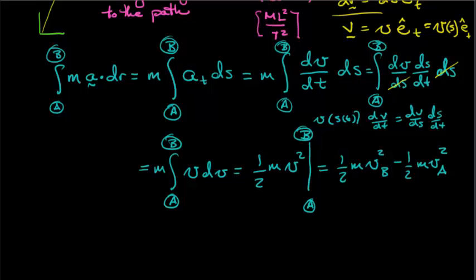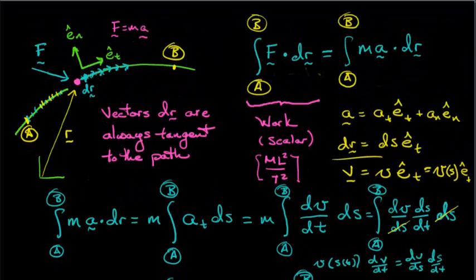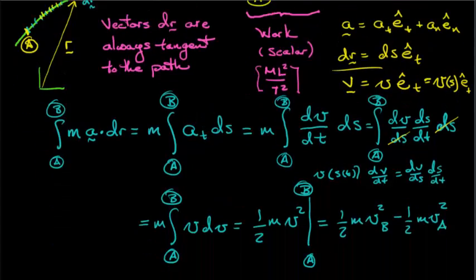So I don't know if you recognize it, but what we just did is something quite profound. We started with this integral that I'm calling the work. Work is a scalar, work is integral of F dot dr. And through some manipulation, we're able to express that work in terms of the speed at the endpoints, or speed squared at the two endpoints.